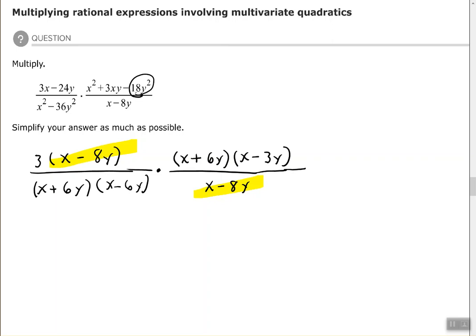I also have x plus 6y in the numerator and denominator, and those are all of my common factors that can be simplified. So now I have left 3 times x minus 3y all over x minus 6y.